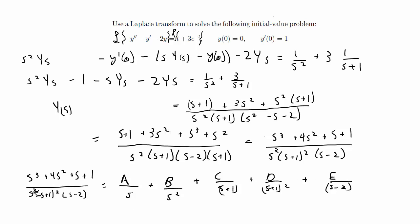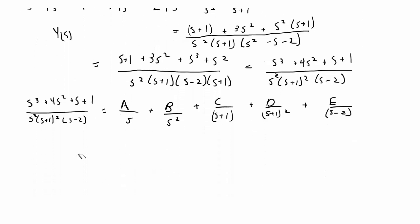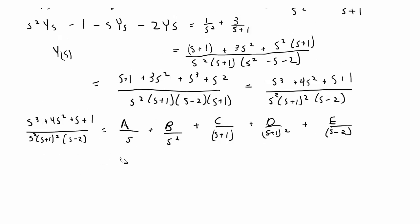Now we have a system of equations to solve for A, B, C, D, E. Because there are so many variables, I would plug in small numbers and use a system of equations since it's 5 unknowns. We take the denominator and multiply it out to all the variables, then compare numerators on both sides.